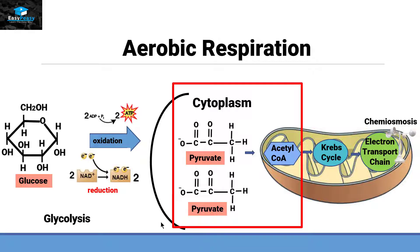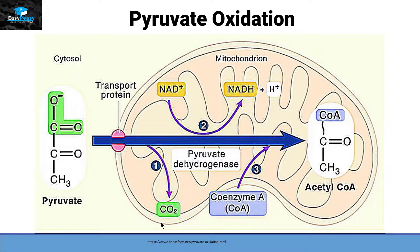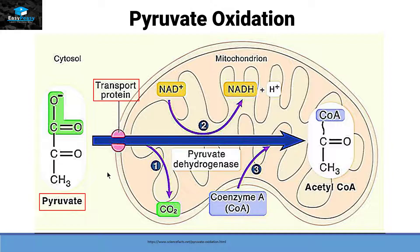Let's discuss this step in a little bit more detail. As you can see in this picture, this is the molecule of pyruvate and this is the mitochondria. This pyruvate will enter the mitochondria with the help of a transport protein. Inside the mitochondria, this pyruvate will release carbon dioxide. Just remember that we have two molecules of pyruvate, so two molecules of carbon dioxide will be released.